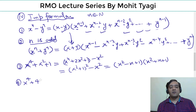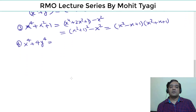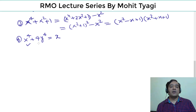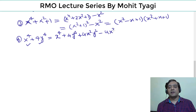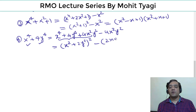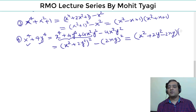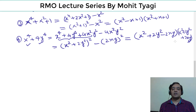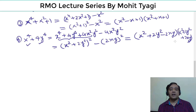Fourth: x⁴ + 4y⁴ (Sophie Germain identity). We add and subtract 4x²y² to complete the square: this becomes (x² + 2y²)² − (2xy)², a difference of squares, which factorizes as (x² − 2xy + 2y²)(x² + 2xy + 2y²). This type of factorization is useful when finding the number of integral solutions of an equation.